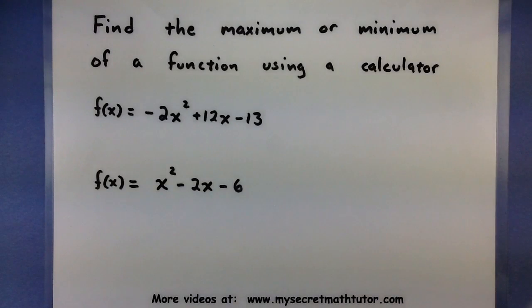For this video, I want to show you how to find the maximum or minimum of a quadratic function using a calculator, and the two functions I'll be looking at are -2x² + 12x - 13 and x² - 2x - 6.